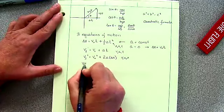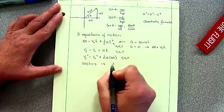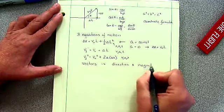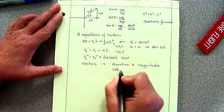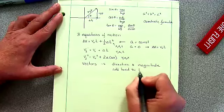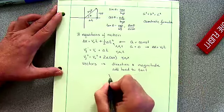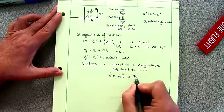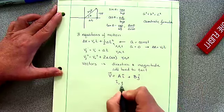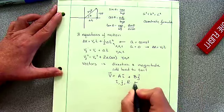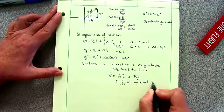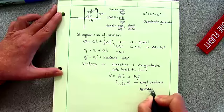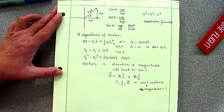We also know that vectors have direction and magnitude. They can be added head to tail. We can represent a vector as a value with a unit vector in the x direction and a value with the y direction, where i and j, and if I want to do it in the z direction k, are unit vectors that have a magnitude of one in those directions.